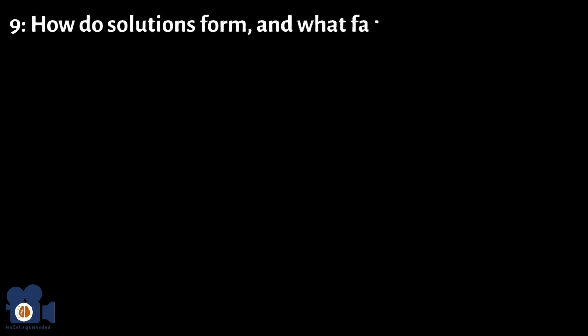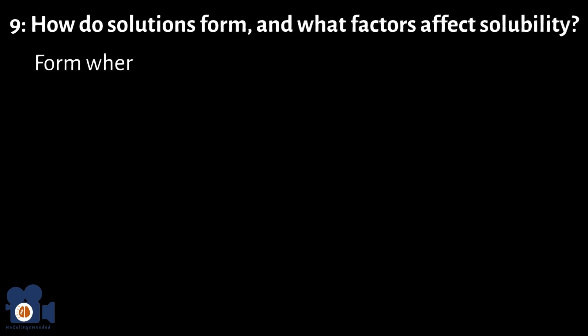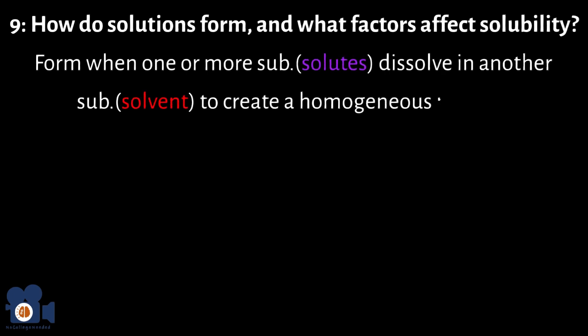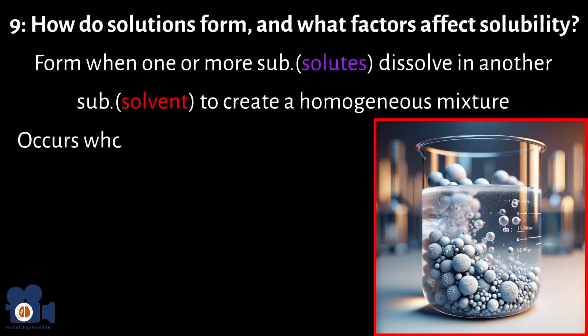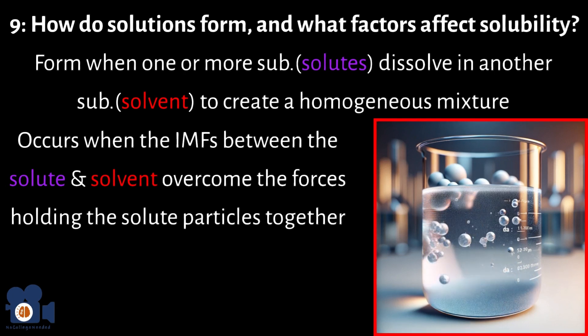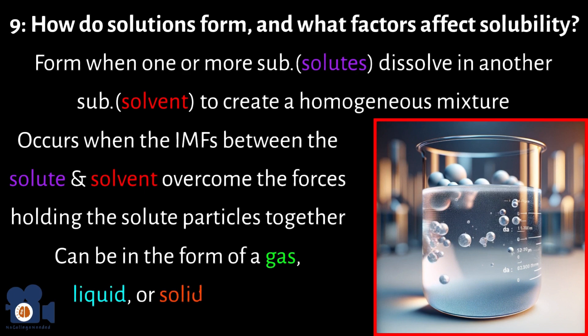Number 9: How do solutions form and what factors affect solubility? Solutions form when one or more substances (solutes) dissolve in another substance (solvent) to create a homogeneous mixture. This process occurs when the intermolecular forces between the solute and solvent overcome the forces holding the solute particles together. The resulting mixture has the same properties throughout and can be in the form of a gas, liquid, or solid solution.